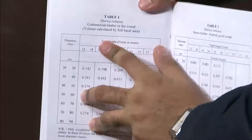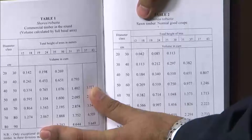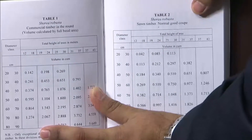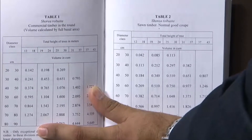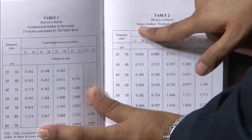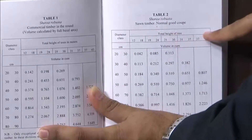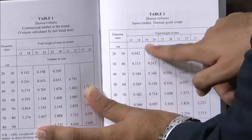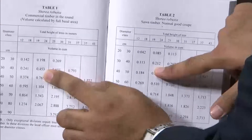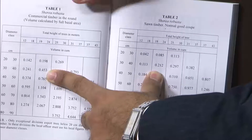This is one table for Shorea robusta giving commercial timber in the round. Another table gives the sawn timber for a normal good coupe — a coupe being an area in which felling operations are performed and timber is extracted. For the same diameter class 30 to 40 and height class 19 to 24, the sawn timber volume is 0.212 cubic meters. Earlier we had 0.453, and this gives 0.212, telling us that roughly we will be able to extract about half the volume in sawn operations.